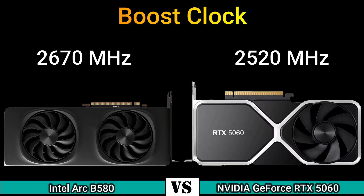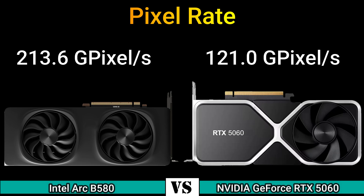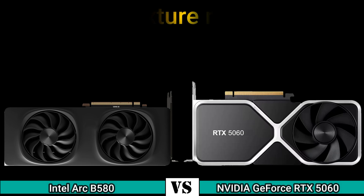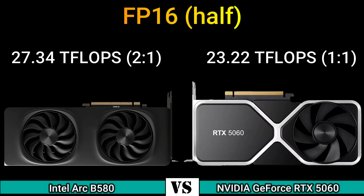Memory clock: 2375 MHz (19 Gbps effective) and 1750 MHz (28 Gbps effective). Pixel rate: 213.6 GPixel/s and 121.0 GPixel/s. Texture rate: 427.2 GTexel/s and 362.9 GTexel/s.